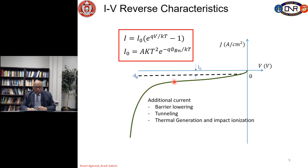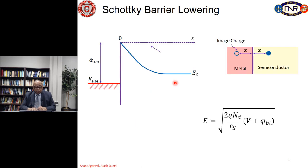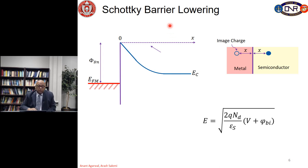The real reverse leakage current is much higher than predicted by I₀ alone, explained by three additional phenomena: barrier lowering, tunneling, and thermal generation and impact ionization. We also see the current increases with reverse bias and then suddenly goes up — this is avalanche breakdown caused by impact ionization. We want to explain why the current increases with reverse bias before breakdown, starting with Schottky barrier lowering.